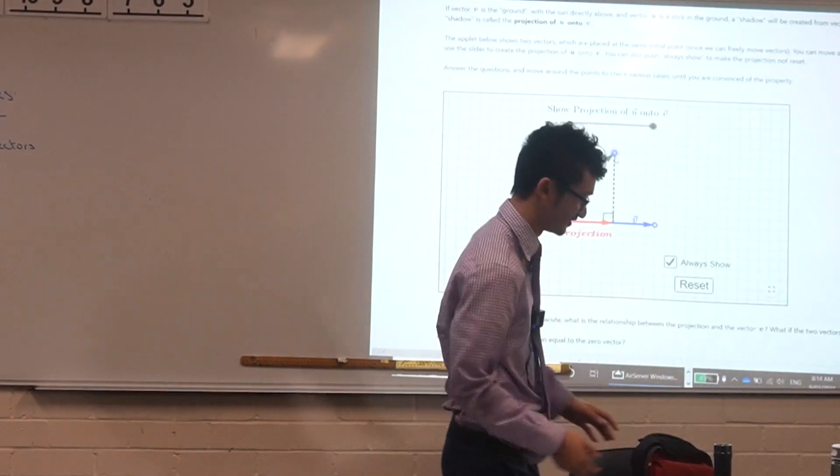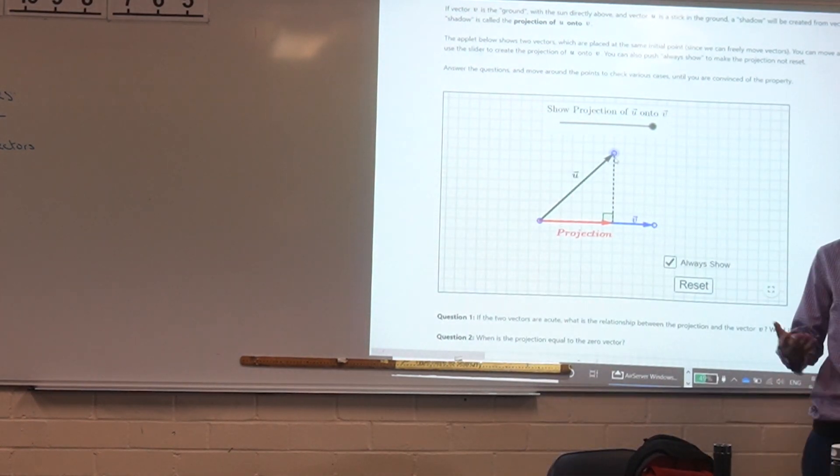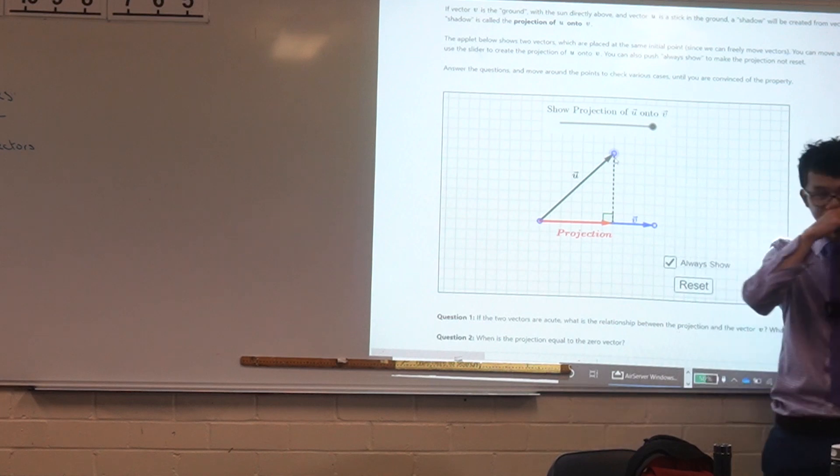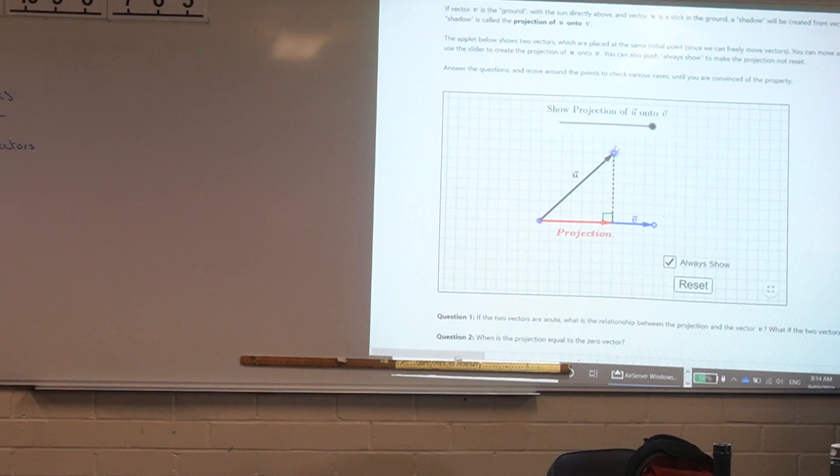Which one? Like what if you make u longer than v? So Caitlin asks what do you think? What will happen if you make u longer than v? What do you think will happen? What's your prediction? I don't know. The projection will just get longer. Yeah that's exactly what happens. There you go. Can you see that?